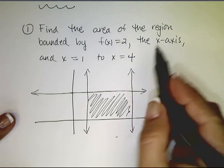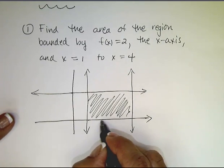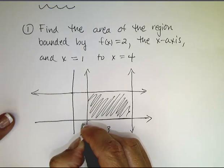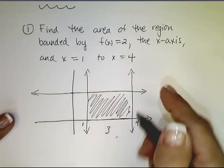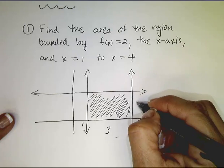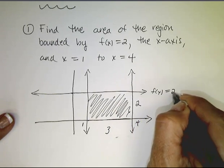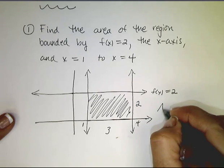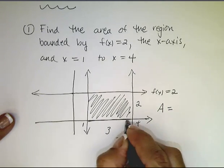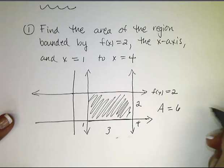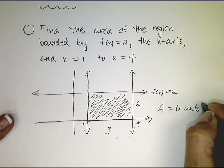Well, that's not hard to do. This is just a rectangle, and I know this distance right here is 3 because this is 1 and this is 4, so their distance is 3. And I know the height of this rectangle is 2 because this passes through the line f(x) equals 2. So the area of this rectangle is 3 times 2, which is 6 units squared.